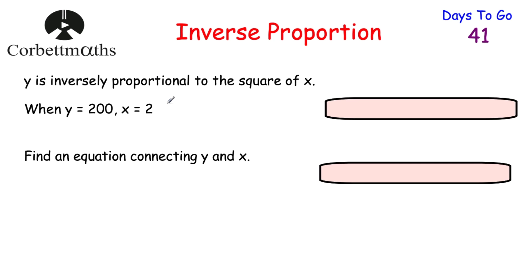Let's have a look at an example. I'm going to go through part A, and then parts B and C underneath. Feel free to press pause now and try the question yourself. We're told that Y is inversely proportional to the square of X, and that whenever Y equals 200, X equals 2.